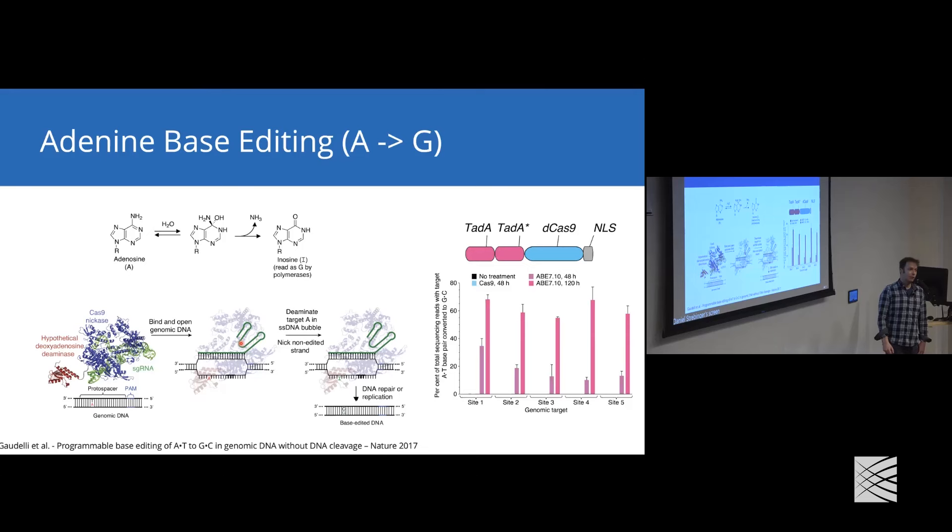What if we want to change other bases? The Liu lab figured out how to build an adenine base editor. The idea of an adenine base editor would be the conversion of an adenine to a guanine. It turns out that if you take adenosine and deaminate it, it turns into inosine, which can be read by polymerase as G. The idea was fairly similar: take a Cas9 nickase, fuse it to a deoxyadenosine deaminase. The system would bind to your target region, it would nick the non-edited strand because the deaminase would deaminate the adenosine which would turn into an inosine. Then upon DNA repair or replication, you would install this guanine.